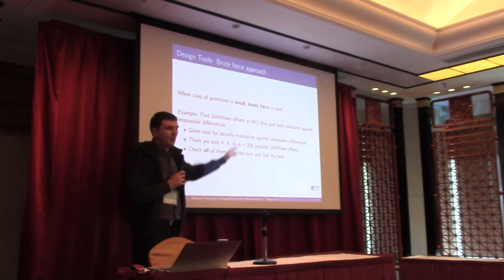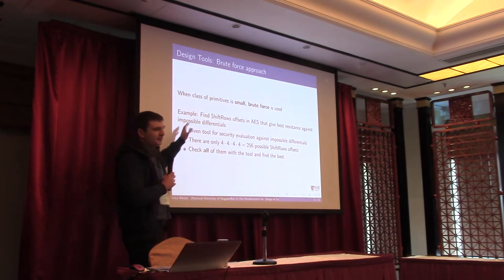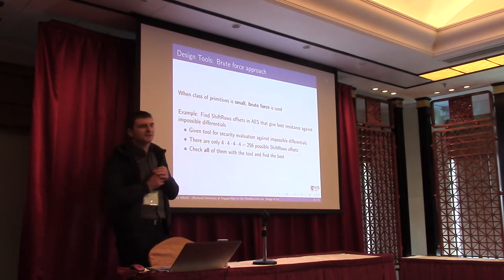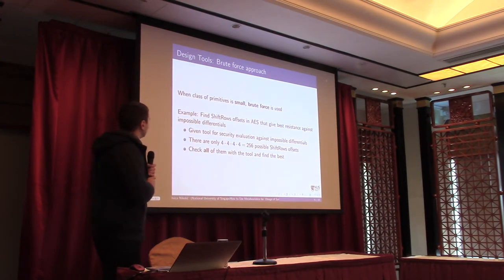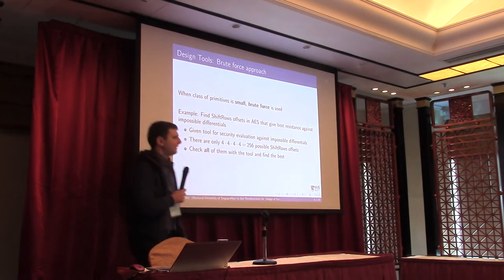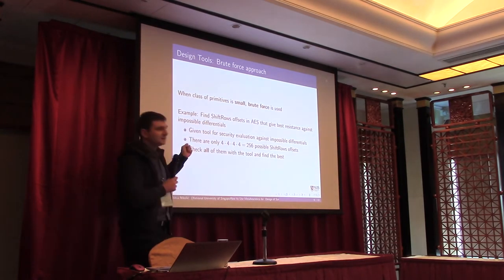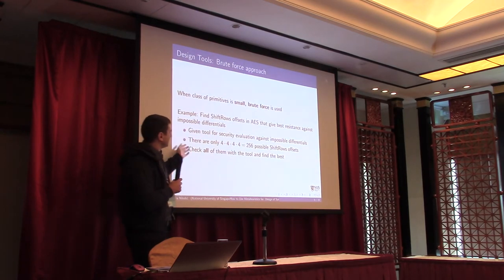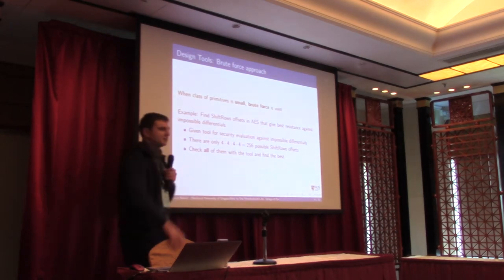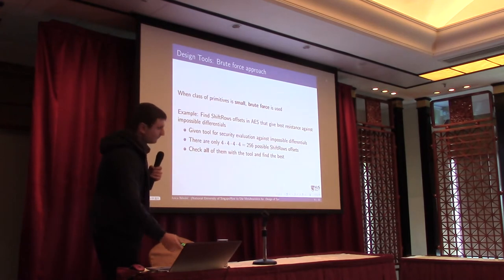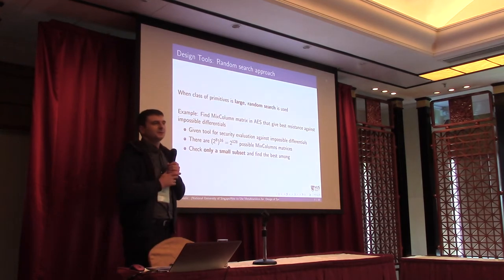When the class of primitives is small, we use brute force. For example, if you want to find better shift row offsets in AES that produce better resistance against impossible differentials, and we already have a tool that evaluates a cipher against impossible differential attacks, and because the number of possible shift offsets is very small, we can go through all of them, apply the tool to each, and find the best shift offsets.